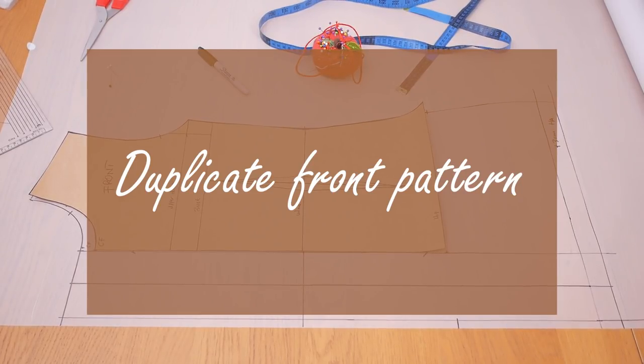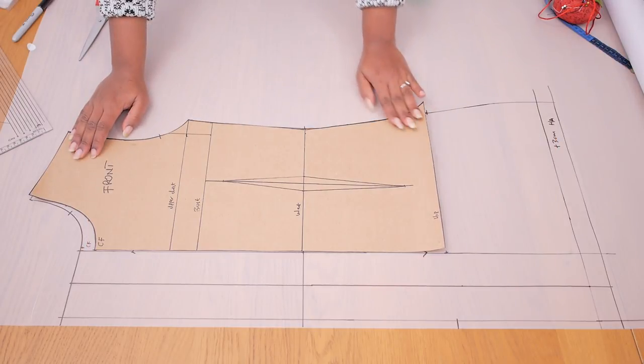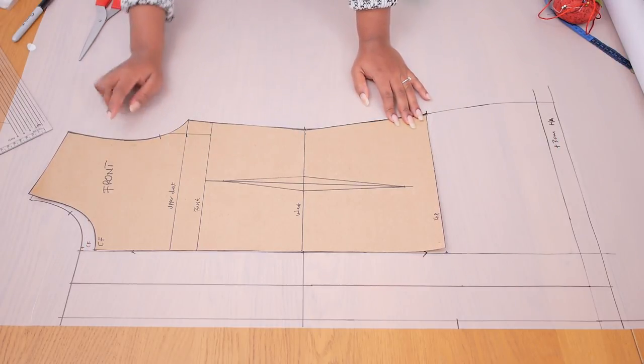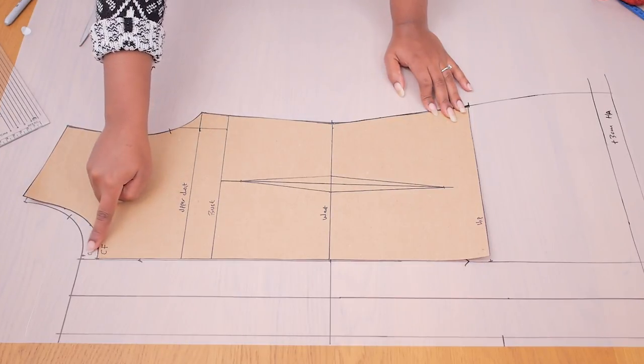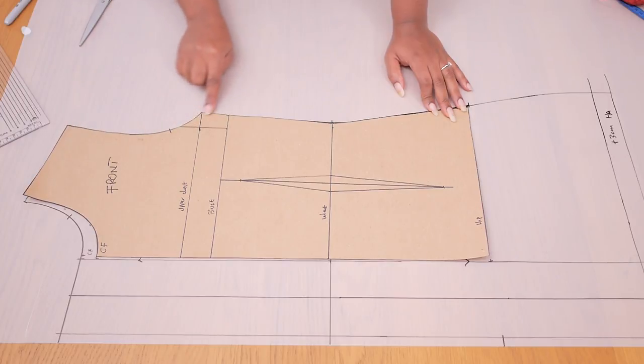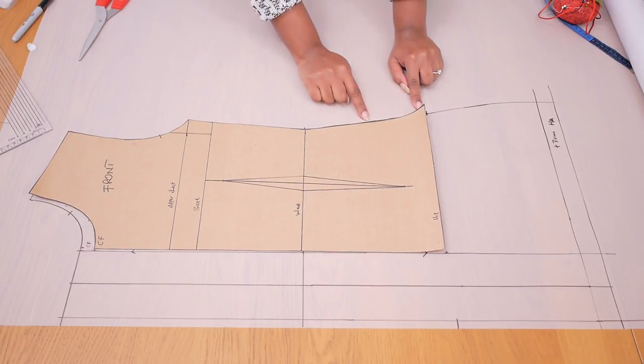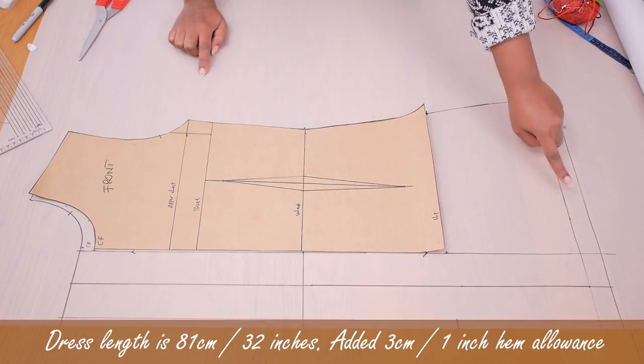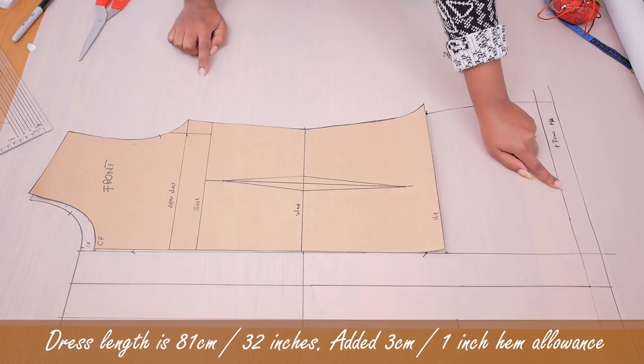So the first thing I'm going to be doing is I'm going to duplicate my front pattern and I've made a few changes to it. So the first thing I've done here is I've raised the front neckline by about 1.5 centimeters and I've connected it round to the shoulder to the side and the dress length is 81 centimeters or 32 inches.